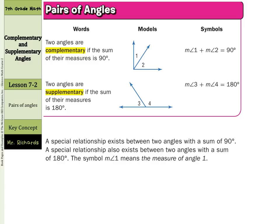A special relationship exists between two angles with the sum of 90 degrees. A special relationship also exists with the sum of 180 degrees. The symbol m∠1 means the measure of angle 1.